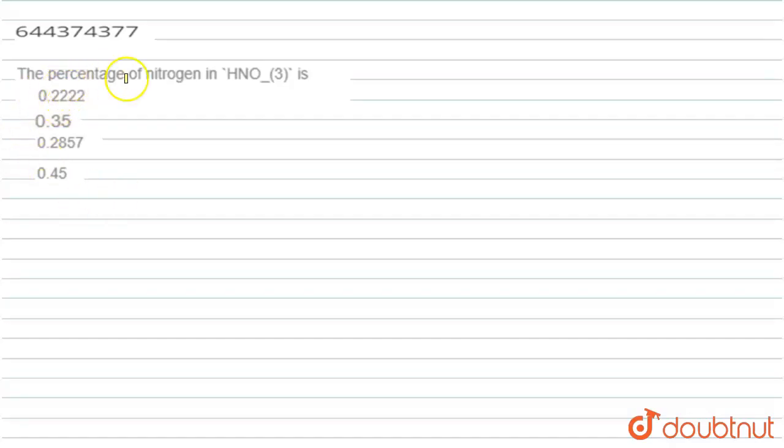The question is: the percentage of nitrogen in HNO3 is? The molar mass of HNO3 is hydrogen 1 plus nitrogen 14 plus oxygen 3 into 16, it is equal to 63. The molar mass of nitric acid is 63 grams per mole.